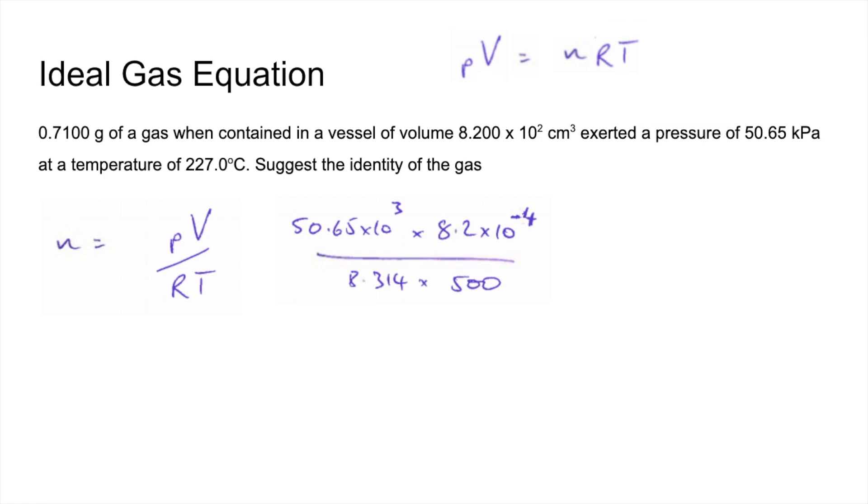The volume, I gave it in CM cubed, it's got to be in metres cubed. So to go from CM cubed to metres cubed, you divide by 10 to the 6. So the number becomes that. And obviously the gas constant, R, doesn't change, but the temperature has to be in Kelvin. So to get Celsius to Kelvin, we add 273. So we get 500 Kelvin for the temperature.